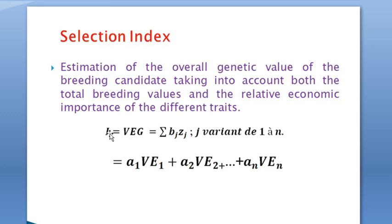The selection index is noted as here presented, where BjZj represents the ponderation of the breeding value and that of the economical value for as many traits as we consider for the selection process. Here j varies from the first trait to the nth trait. This equation is presented where we have a1·VE1 as the terms for the first selection criteria or trait, a2·VE2 for the second—here we have n traits that we are considering in the selection matrix or selection process.